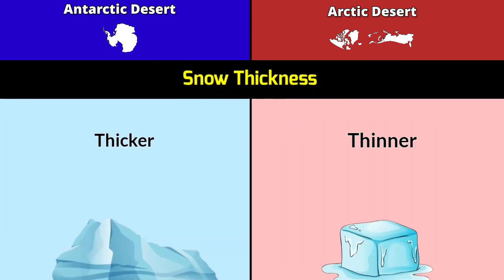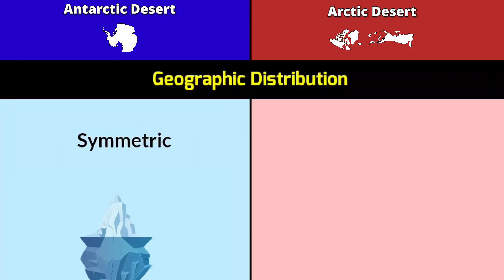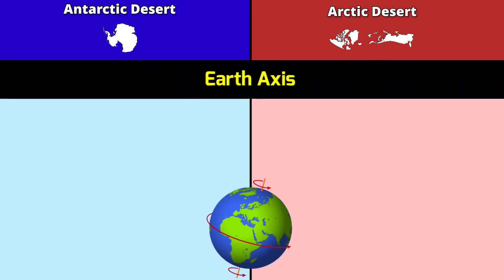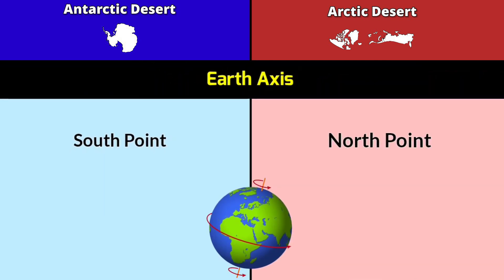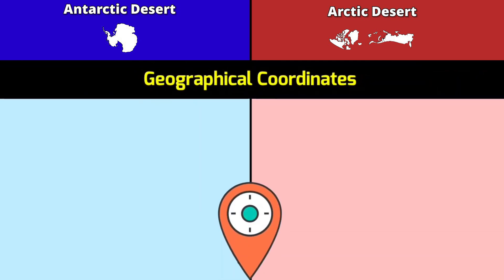Snow thickness: Antarctica Desert is thicker; Arctic Desert is thinner. Geographic distribution: Antarctica is symmetric; Arctic is asymmetric. Earth axis: Antarctica is at the south point; Arctic is at the north point. Geographical coordinates: 90 degrees south vs 90 degrees north.